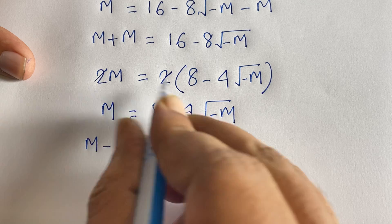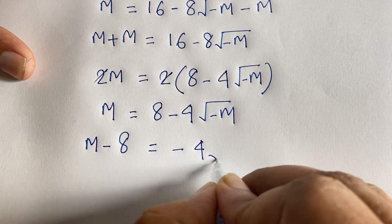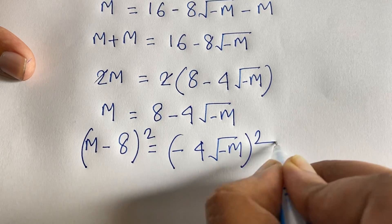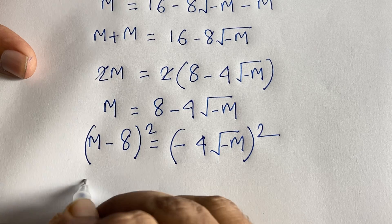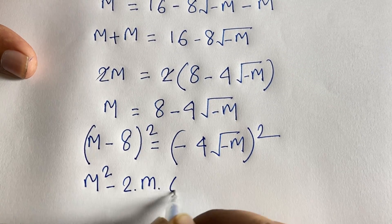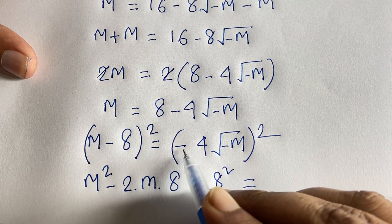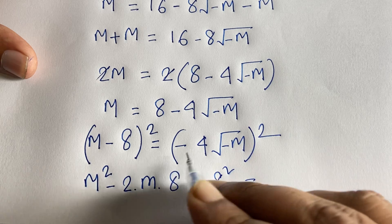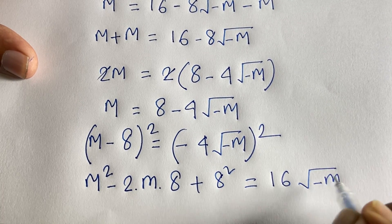Moving 8 to the left side: m minus 8 = -4√(-m). I square both sides again. The left side expands as (m-8)² = m² minus 2×m×8 plus 8² = m² minus 16m plus 64. The right side: (-4)² is 16, and (√(-m))² gives -m, so the right side is 16×(-m) = -16m.